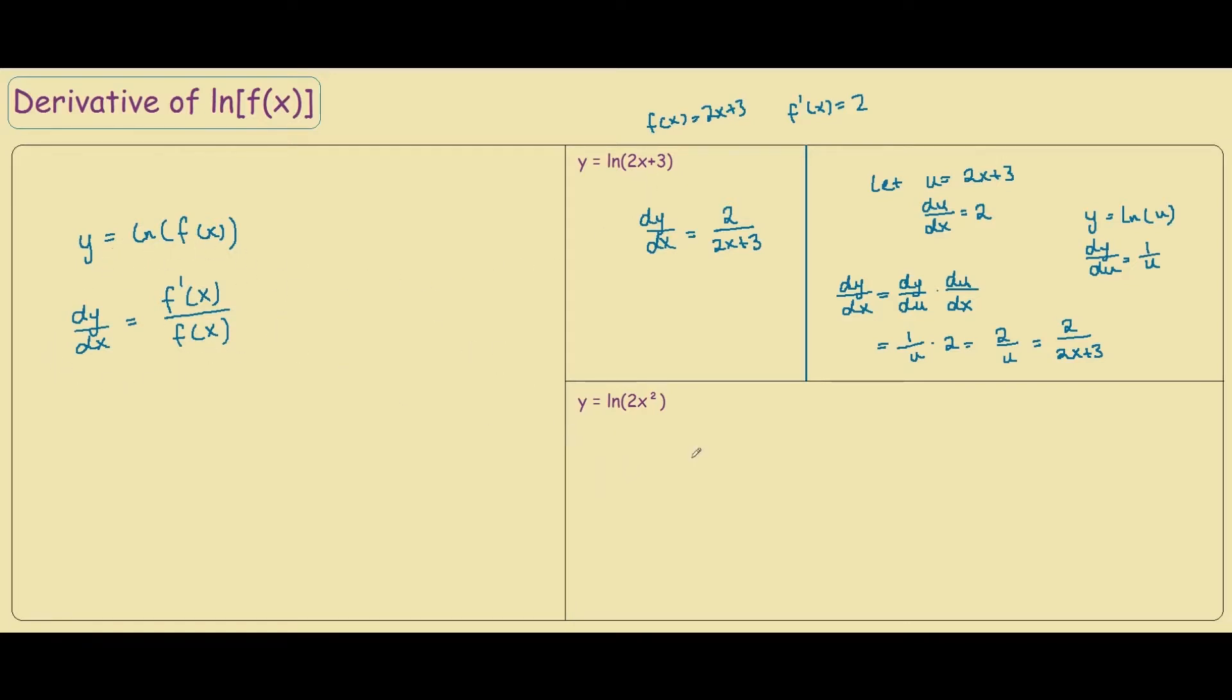So using the formula again for this question over here, we have dy/dx equals the derivative of the inside function, so that would be 4x divided by 2x squared, which can be simplified down to 2 over x.